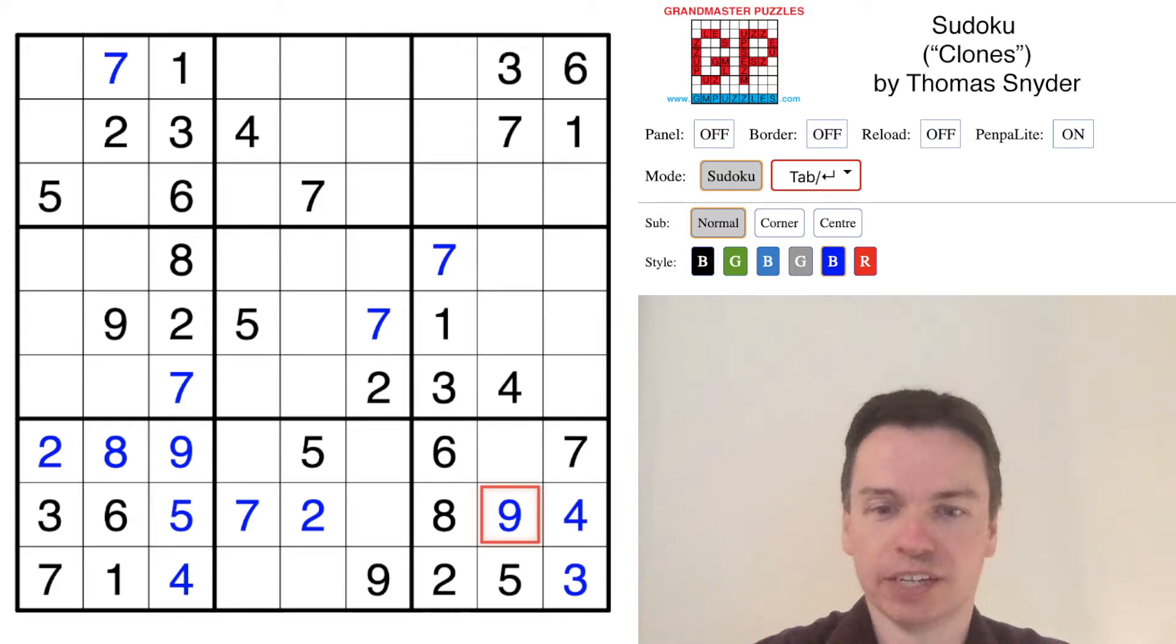The four has a unique spot. Nine now has to be here, one has to be here, one has to be here to finish this out. We've got three and four in these cells, and the four is on the right, so we're making good progress here.